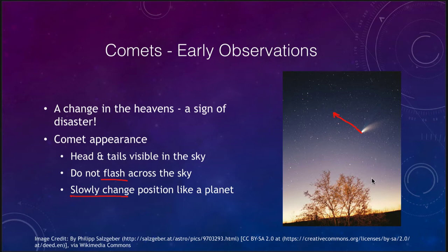So if you see a comet one night, you can go back out the next night and it will be in roughly the same position. It won't change drastically from just one day to the next, just like any other solar system object. Jupiter or Venus will remain in essentially the same spot over the course of a couple of days.